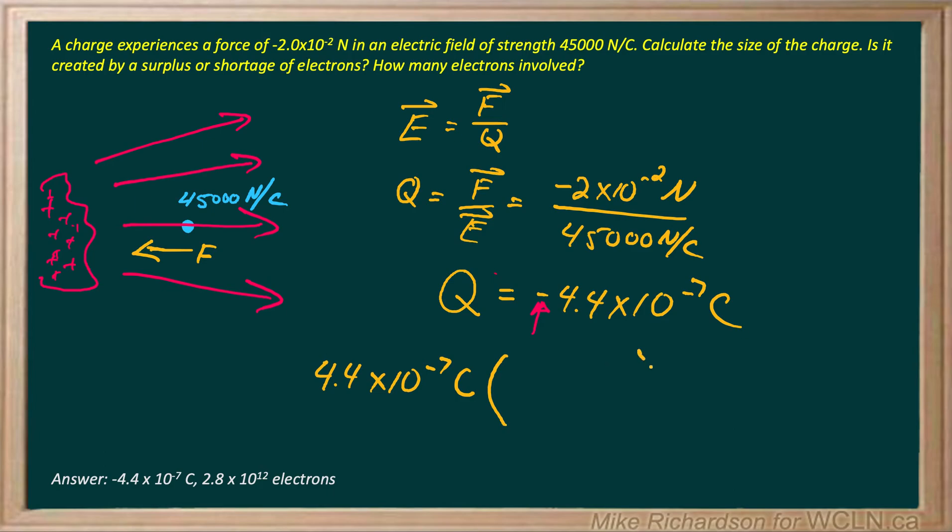And I want to convert that to the number of electrons. Coulombs is on top, so I want to make sure it's on the bottom. For every electron, one electron has a charge of 1.6 times 10 to the negative 19 Coulombs. And when I do that division,